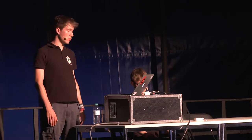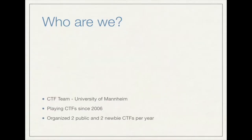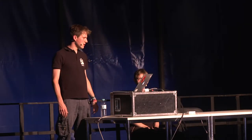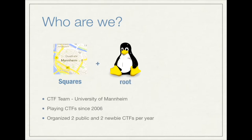A short introduction about who we are. Stefan and I are members of the Square Roots, which is the official CTF team of University of Mannheim. We as a group started participating in CTF around 2006. Right now, we organize two public CTFs and also a workshop each year with two new BCTFs to teach new interested students the topic. The name Square Roots comes from Mannheim, also called Quadratestadt — Square City in German — and we combined 'square' with 'root' from Linux.